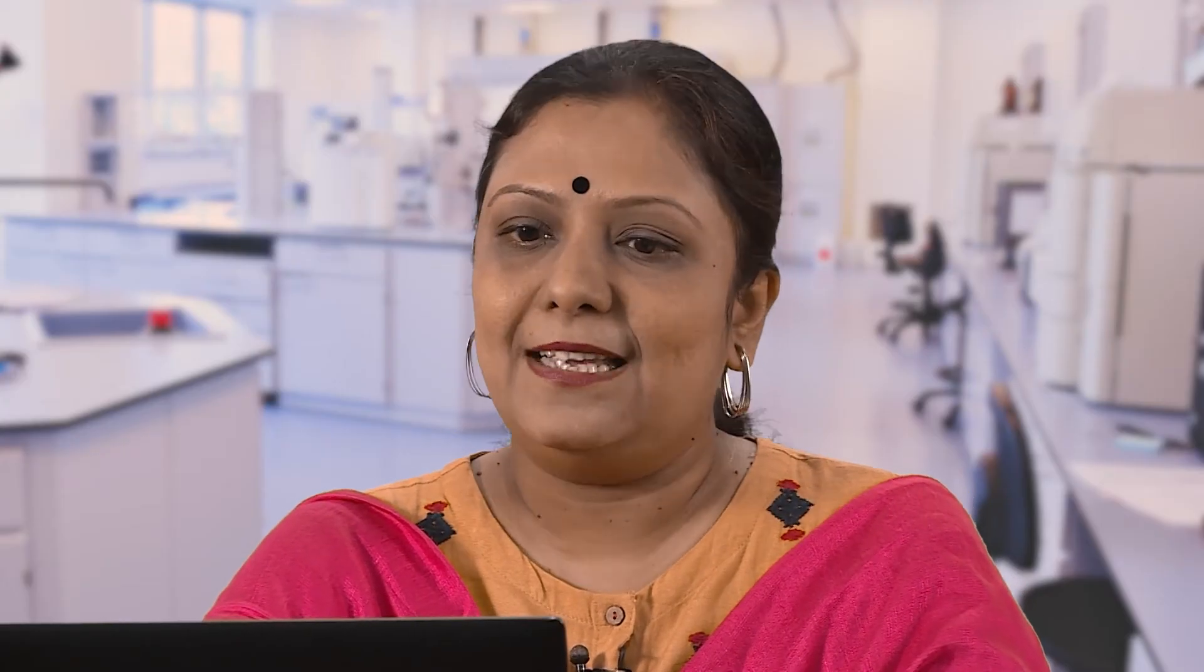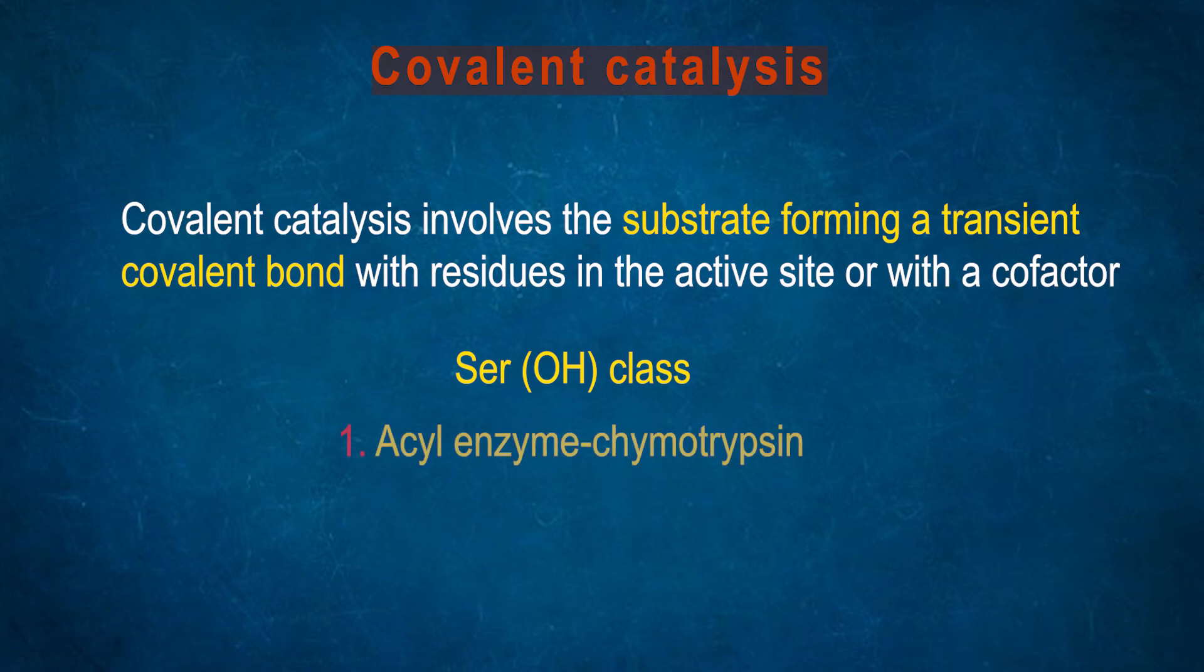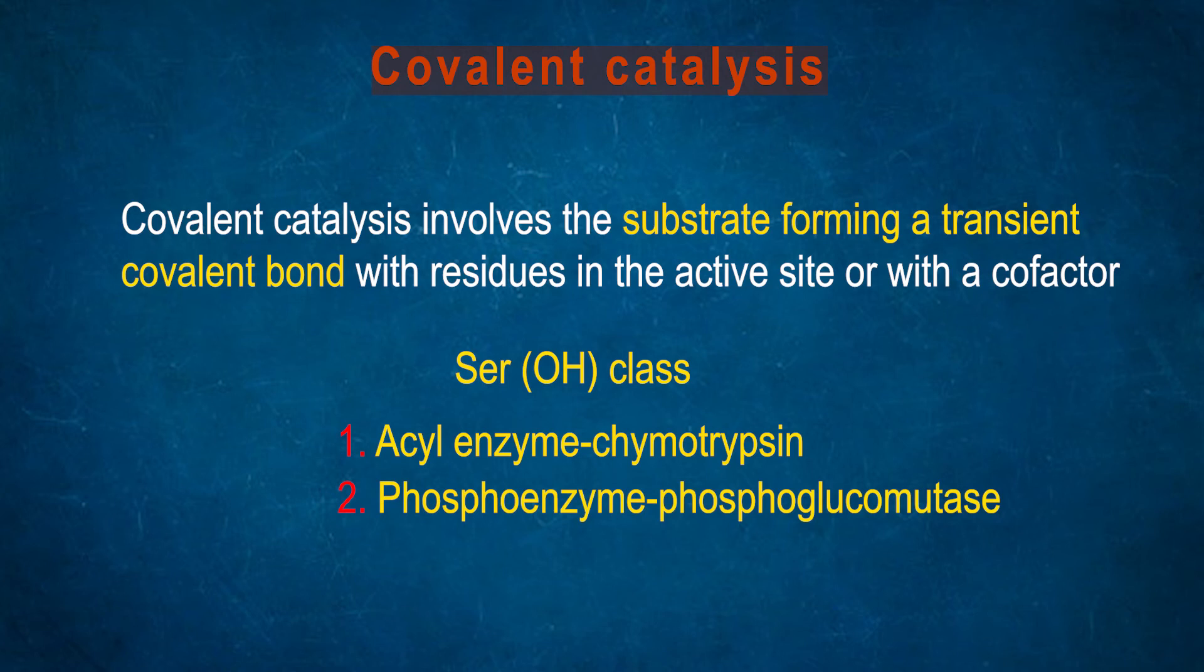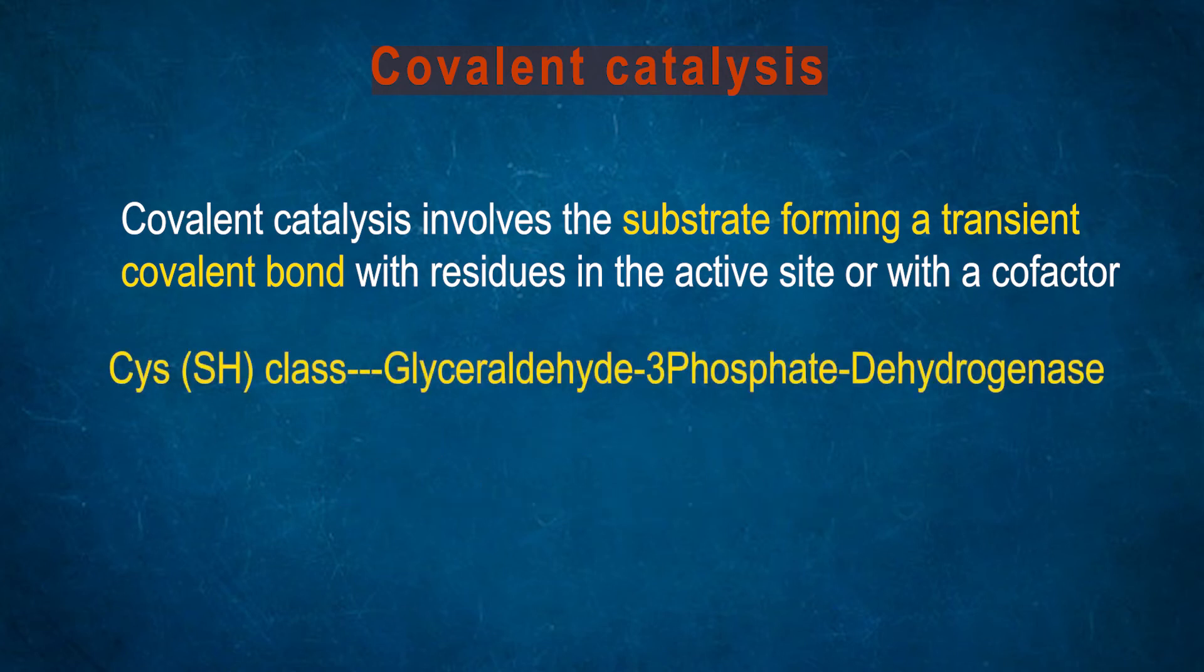Covalent catalysis involves the substrate forming a transient covalent bond with residues in the active site or with a cofactor. Serine class of enzymes have hydroxyl groups. Acyl enzyme found in chymotrypsin, phosphoenzyme found in phosphoglucomutase. Cysteine class with thiol group found in glyceraldehyde-3-phosphate dehydrogenase. Histidine class contributing imidazolium ring found in succinyl-CoA synthetase.